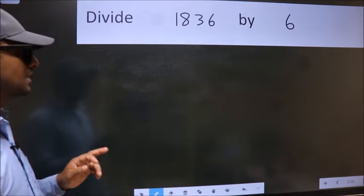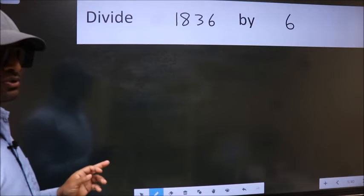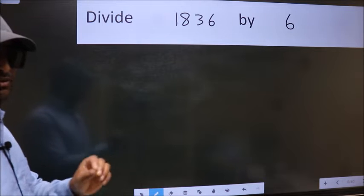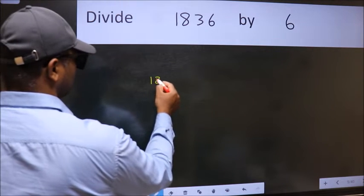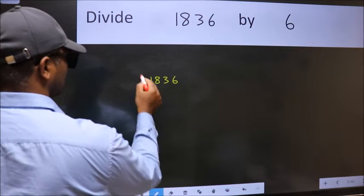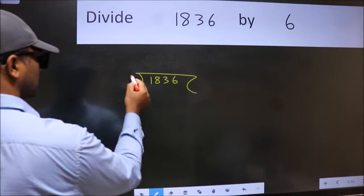Divide 1836 by 6. To do this division, we should frame it in this way. 1836 here, 6 here.